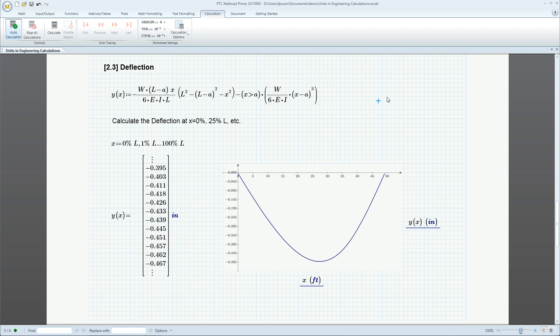Engineers often deal with unit conversion inconsistency. With PTC MathCAD Units Intelligence, we can automatically define and evaluate in units of our choosing. Conversion is done automatically, and consistency is checked to prevent errors.